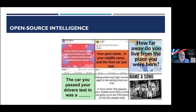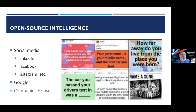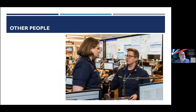One of my previous clients nearly got caught with a similar attack that would have cost them a quarter of a million pounds. So how do malactors gather information to start these attacks? The first thing they do is look at open-source intelligence. Social media is a great starting point — LinkedIn, Facebook, Instagram. Those Facebook quizzes about the car you passed your driving test in, or your mother's maiden name combined with your first car — social engineers use these to build a picture of you.